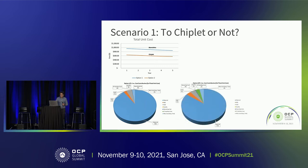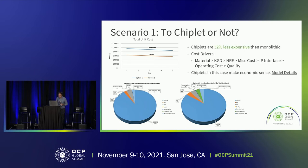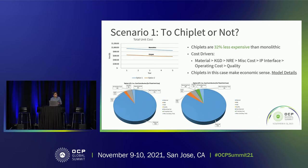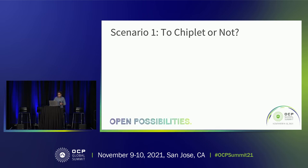The pie charts compare option one and option two — monolithic versus chiplet. The model shows what the cost drivers are: the biggest impact is material, but the second biggest is KGD. You can use this to prioritize: if you want better cost savings, you may need to invest more effort in KGD — looking at different assembly sequences, including tests, or other approaches to reduce the KGD impact.